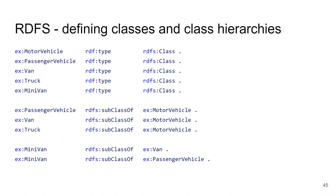To define a class in RDFS, you say it is of type rdfs:Class. For example, to define a class MotorVehicle, you write: ex:MotorVehicle rdf:type rdfs:Class. You can then define PassengerVehicle, Van, Truck, Minivan, etc. as classes. Once defined, you can use them in data to say 'this green car is a motor vehicle' or 'this blue car is a minivan.'